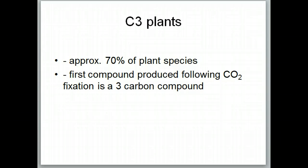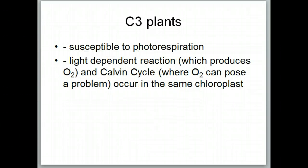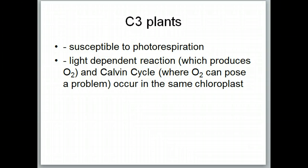In this section we're going to talk about C3 and C4 plants. Approximately 70% of all plant species are C3 plants, and they're called C3 plants because the first compound produced following carbon dioxide fixation is a three-carbon compound. The form of photosynthesis we've discussed so far involves C3 plants. The problem with C3 plants is that they are susceptible to photorespiration, because the light-dependent reaction that produces oxygen and the Calvin cycle where oxygen can pose a problem occur in the same chloroplast.